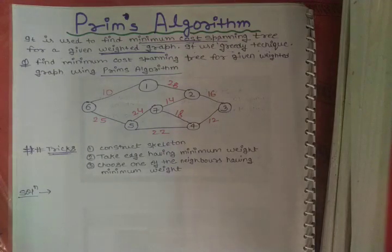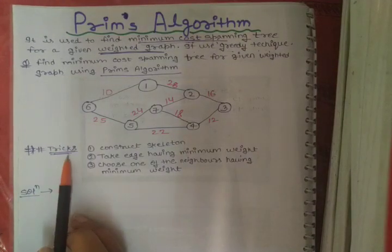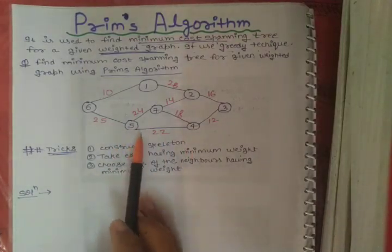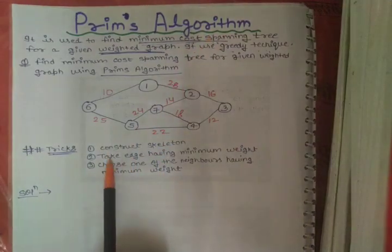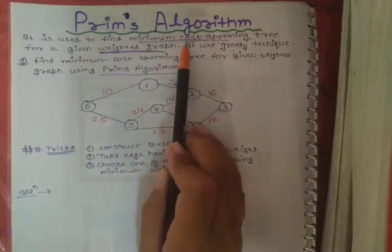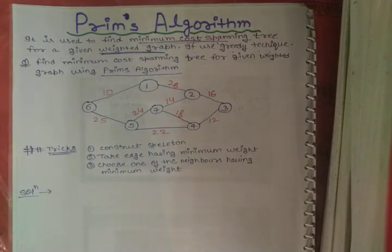First watch this video, and in the next video I will explain the second case of Prim's algorithm where some weights are the same. I have made some special tricks to construct the minimum cost spanning tree using Prim's algorithm. You can use different methods, but these tricks make the construction easier.